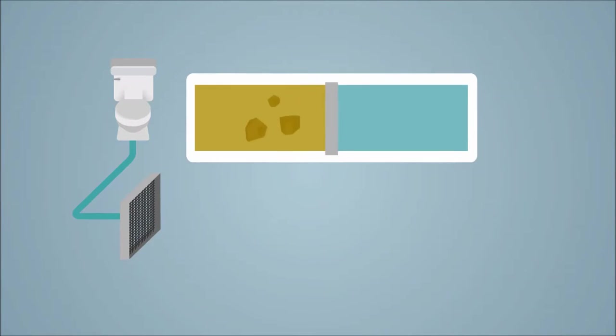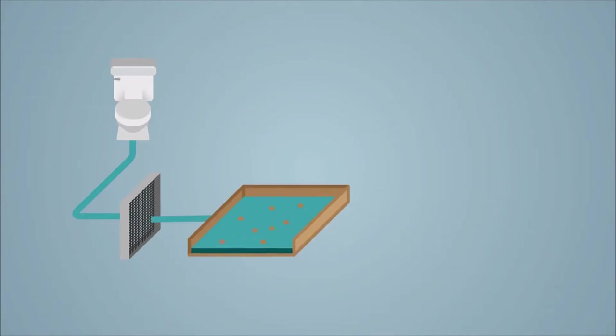First of all, screens take out large objects that may have fallen into the sewers. Then the sewage flows slowly to allow grit and gravel to settle.